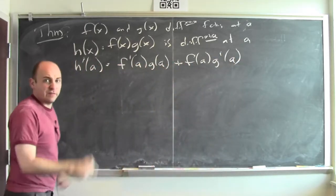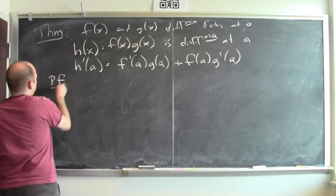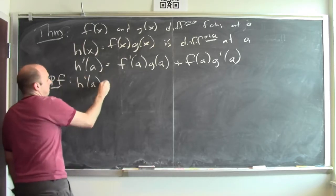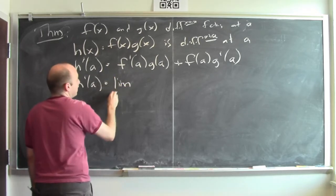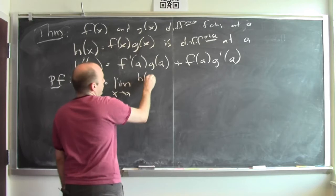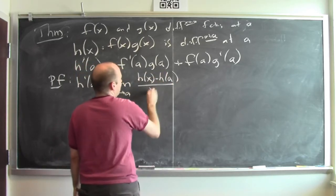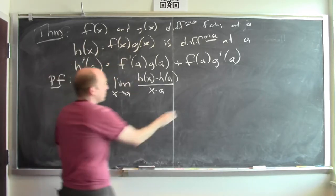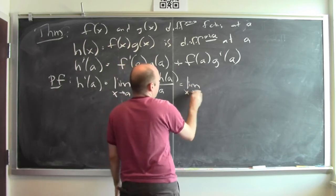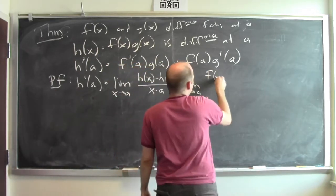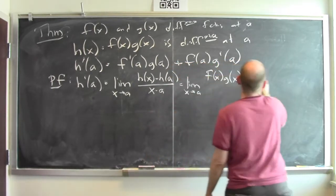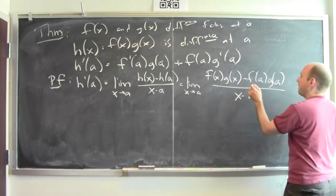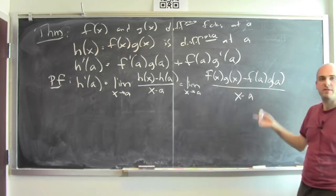Let's prove it by using the definition of derivative. I want to convince myself that the derivative of h is this. The derivative of h at a, by definition, is the limit as x goes to a of h of x minus h of a, over x minus a. Now I know what h is — h is the product of f and g — so I can plug that in. This is the limit as x goes to a of f of x times g of x, minus f of a times g of a, all over x minus a. I just replaced h by its definition.